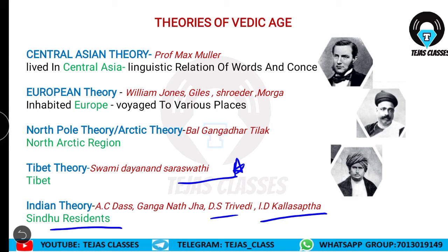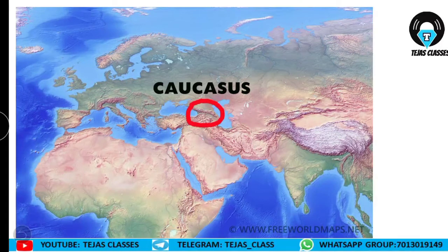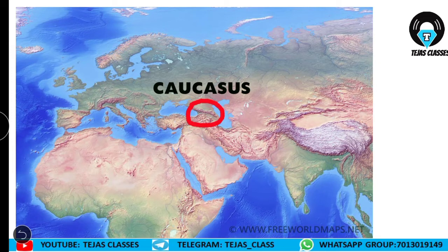Now you can see the world map where I have circled the Caucasus Mountains. Just observe for a moment — if you learn this map clearly, the entire Aryan invasion topic will be complete. Beside the Caucasus Mountains there are two seas. Can anyone please mention the names of those seas in the comment section?